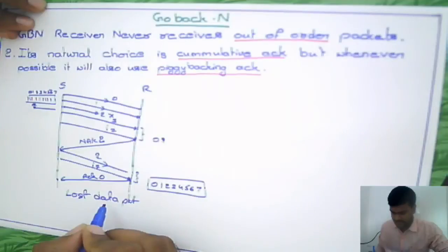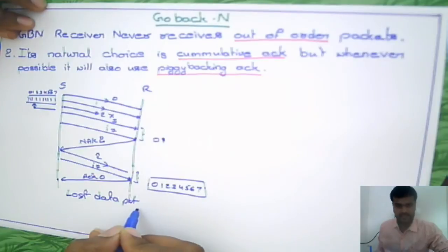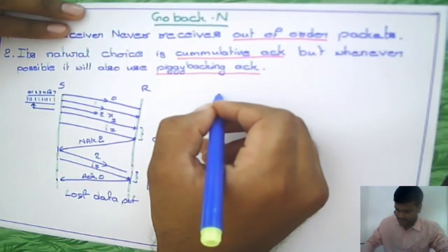So like we've seen in stop and wait protocol, we also have some problems here. This is one of the problems. Last data packet, if you see the next one.